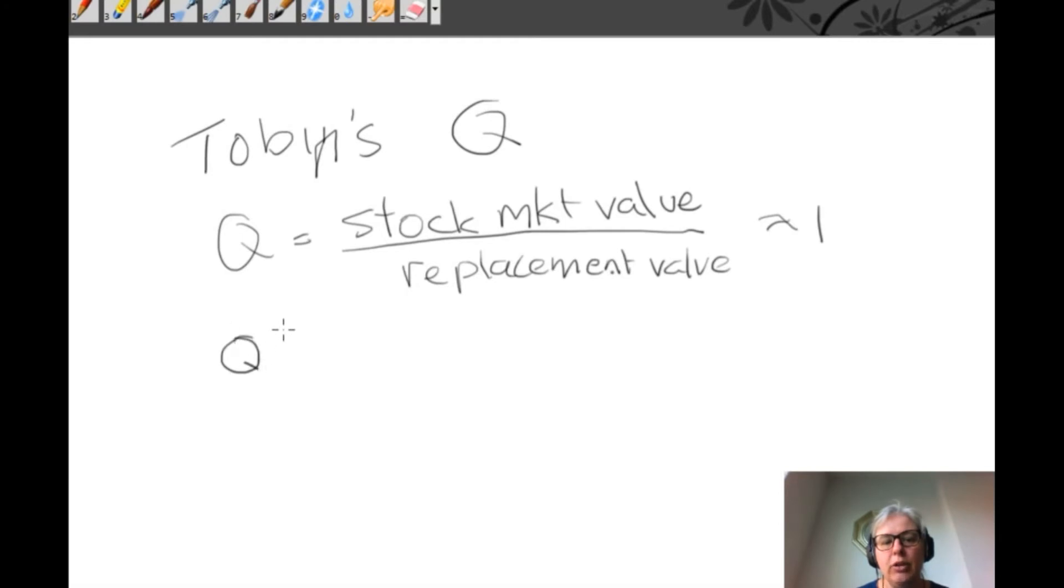You can see this because when you think about Q greater than one, that would mean that the stock market value of the asset in use in the company, for example, is greater than the replacement value. So that would say that the assets held by a company are of greater value in production in that company than they are sitting on the sales floor. So that will tend to lead to investment. So when Q is greater than one, you can get more out of the capital by putting it in a company than you can by having it in its physical asset form as a replacement.